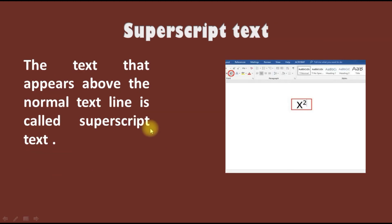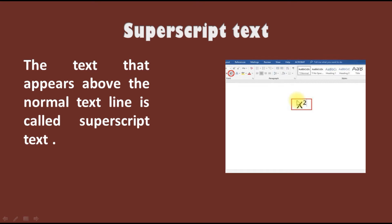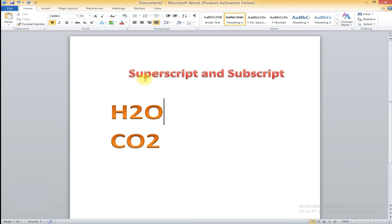First of all, we will see superscript. Superscript is the text that appears above the normal text line. And subscript is when the text appears below the normal line. We will just do this in MS Word also. Let's see - I have these two words H2O and CO2.